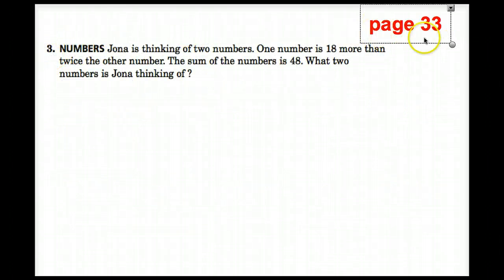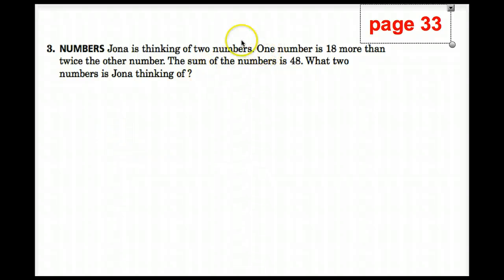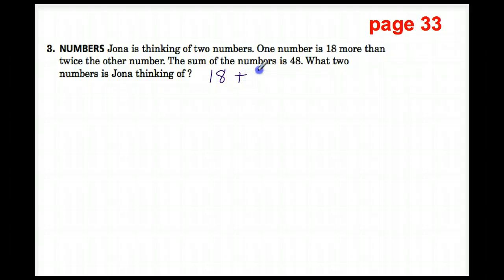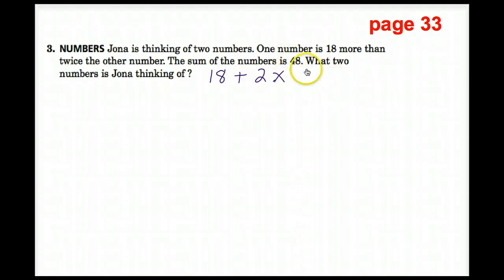On to number three — still on page 33. It says: Jonah is thinking of two numbers. One number is 18 more than twice another number. The sum of the numbers is 48. What two numbers is Jonah thinking of? We know, because we've been working with expressions, that 18 more than twice the other number translates to 18 plus 2 times X. Once we make our chart, it'll make more sense.